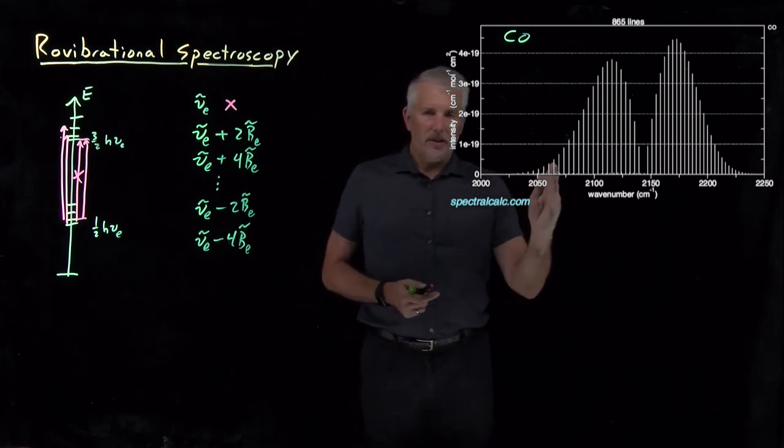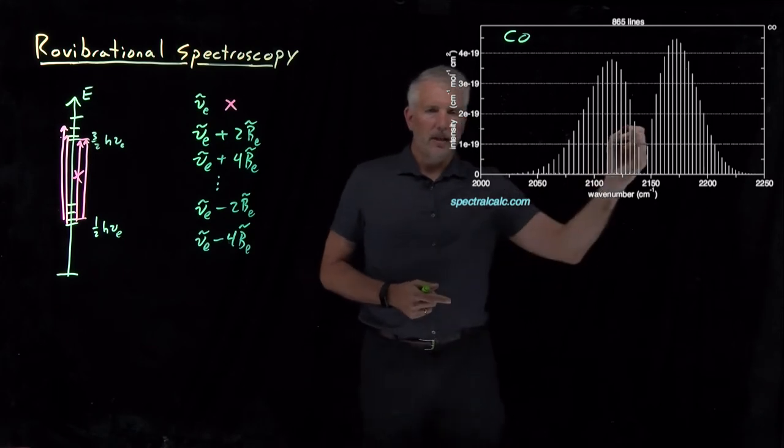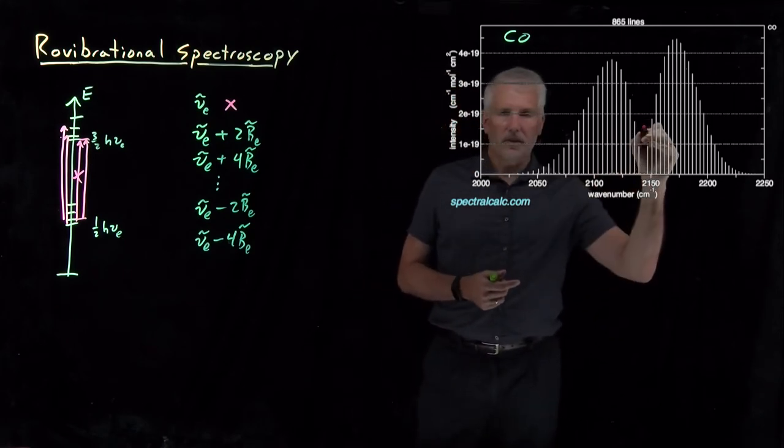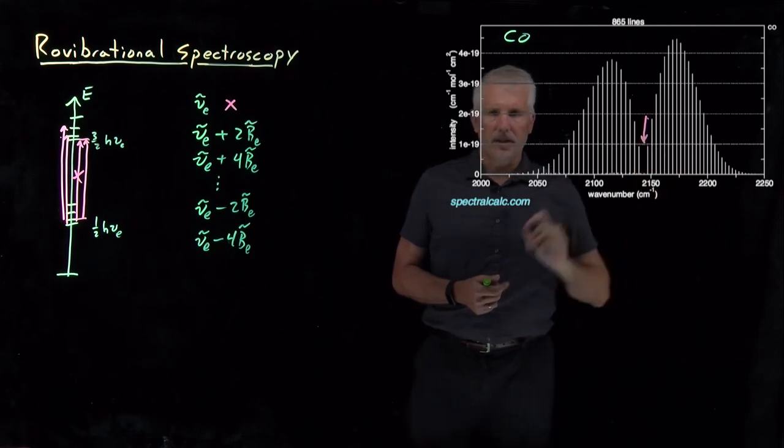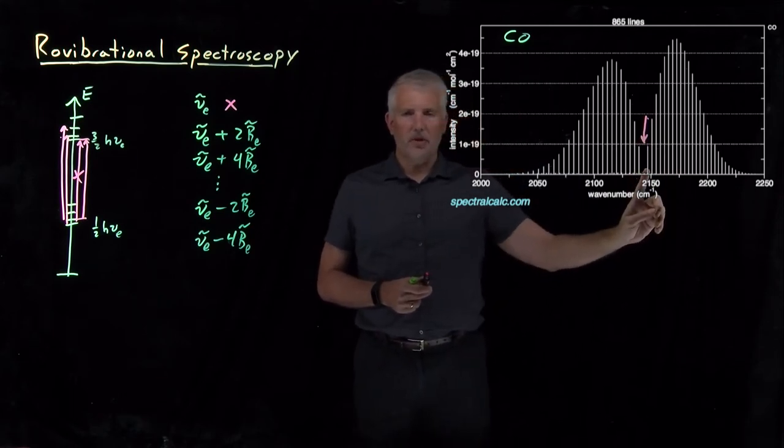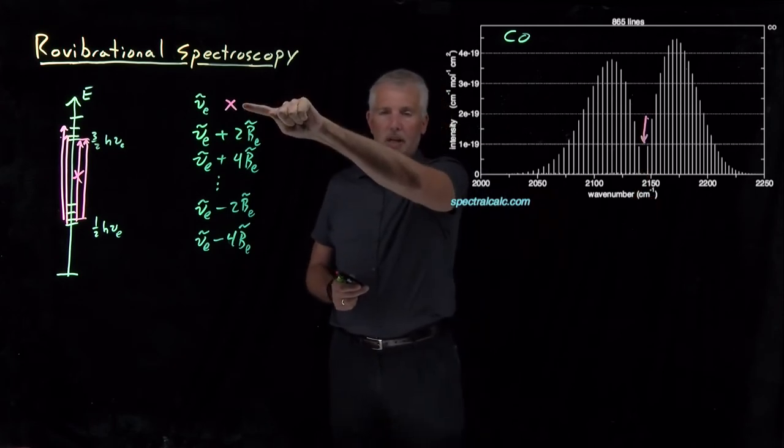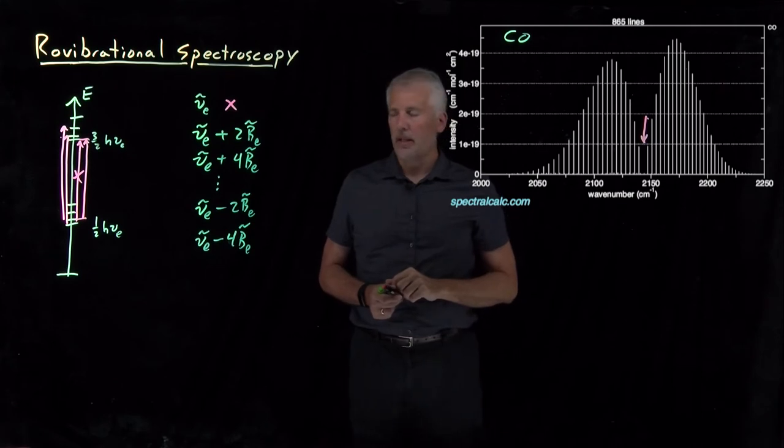We can see that that is in fact what we see. There's a series of different frequencies at which the molecule absorbs light. There's one frequency in the middle of this diagram that looks like it's missing, the hole in the middle of this diagram. That corresponds pretty closely to the fundamental vibrational frequency, where the molecule is not allowed to absorb light by the selection rules.